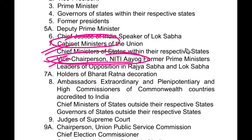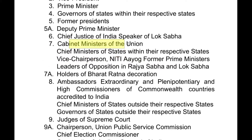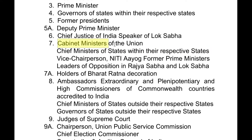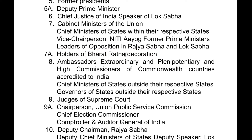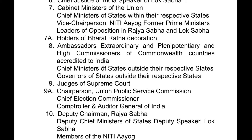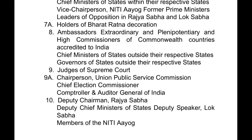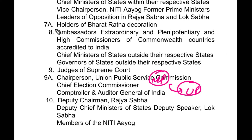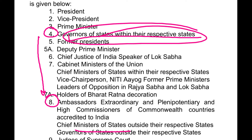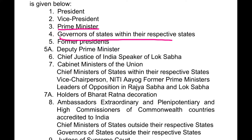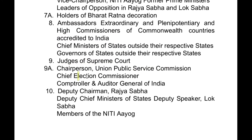After the cabinet ministers of the union come the holders of Bharat Ratna, then ambassadors of Commonwealth countries, then chief ministers of the state and governors of the state outside their respective states. For example, if the governor of Madhya Pradesh goes to U.P., they will be in the 8th number, but if the governor of Madhya Pradesh is in Madhya Pradesh, they will be in the 4th number. Then come the judges of the Supreme Court, UPSC chairman, Chief Election Commissioner, and Comptroller and Auditor General of India.